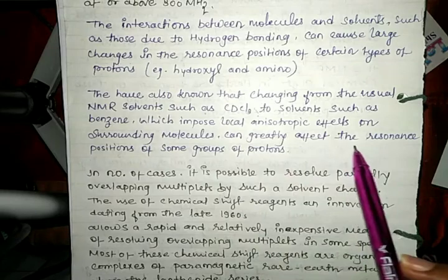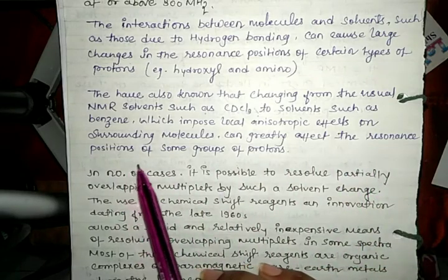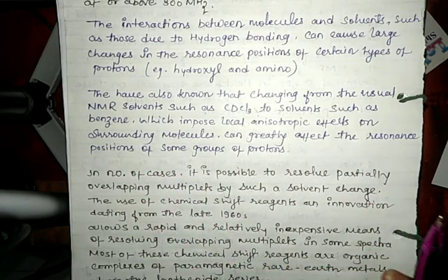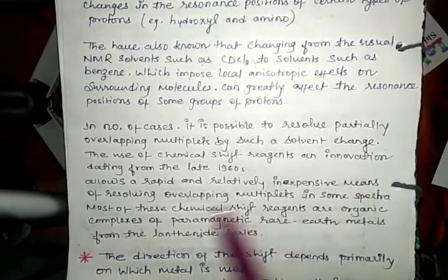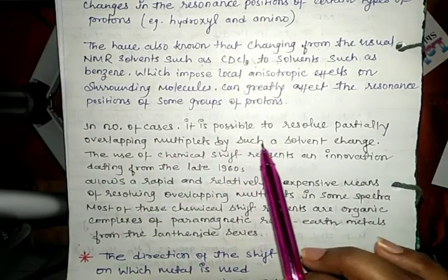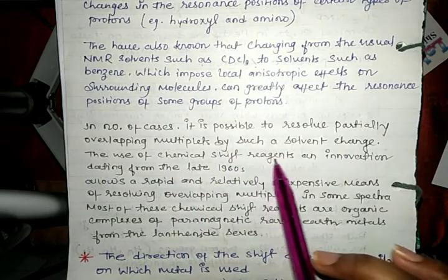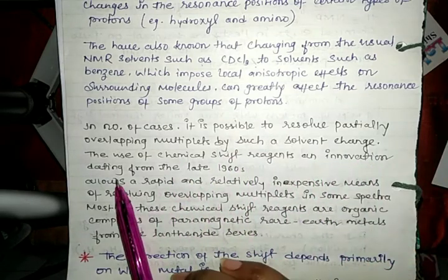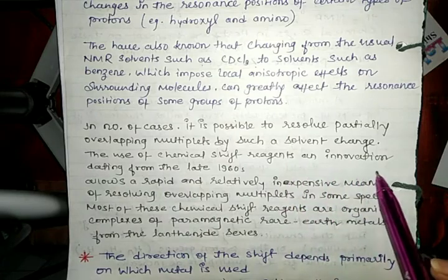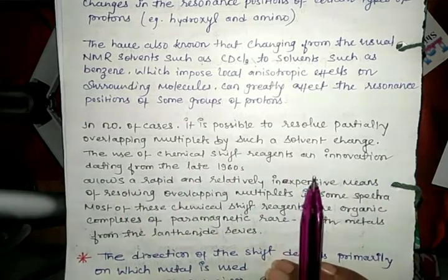In number of cases, it is possible to resolve partially overlapping multiplets by such a solvent change. The use of chemical shift reagents, an innovation dating from the late 1960s, allows a rapid and relatively inexpensive means of resolving overlapping multiplets.